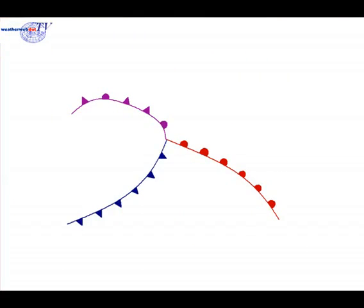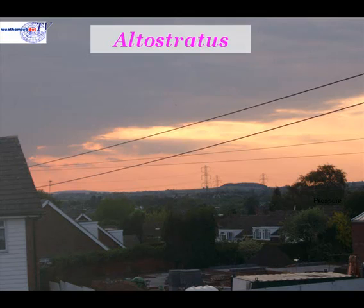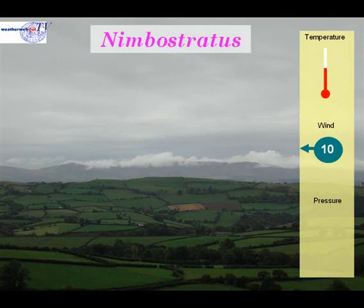Now let's take a detailed look at the weather as the front moves through, and we'll start with a zone ahead of the occluded front. Ahead of the front is likely to be Alto Stratus cloud. This will gradually thicken, and rain could start to fall as the Alto Stratus cloud moves in. Next, the cloud will thicken and the rain will become more persistent as the cloud turns to Nimbo Stratus cloud.